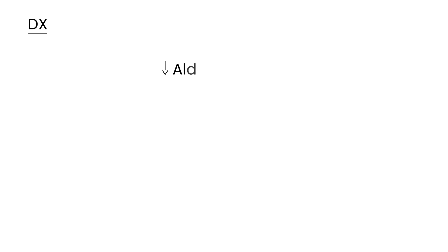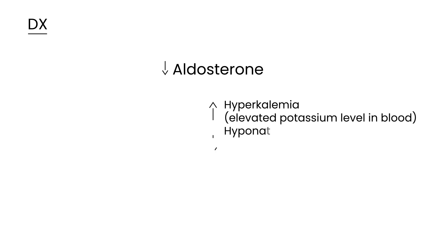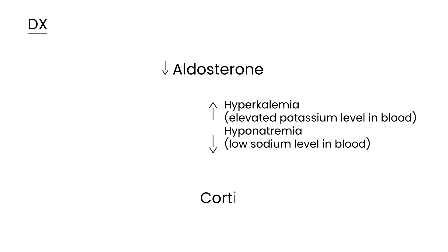For diagnosis, because we have low levels of aldosterone, blood tests will reflect the electrolyte abnormalities. You can also measure cortisol levels in the bloodstream, and those will be low. You can also measure ACTH levels, and those will be high.